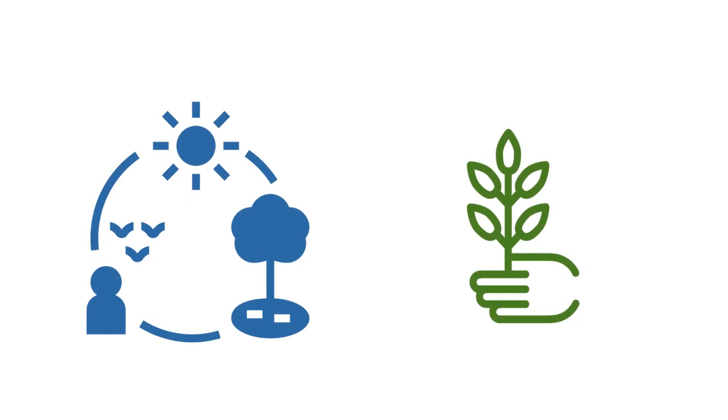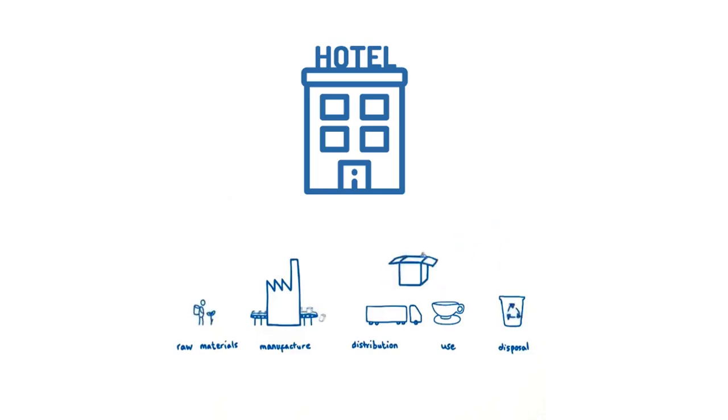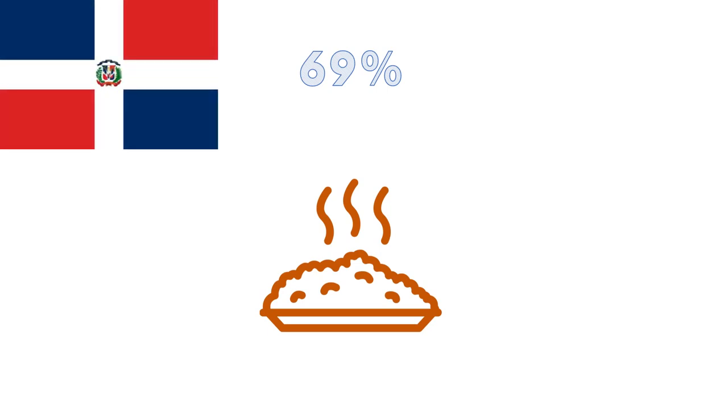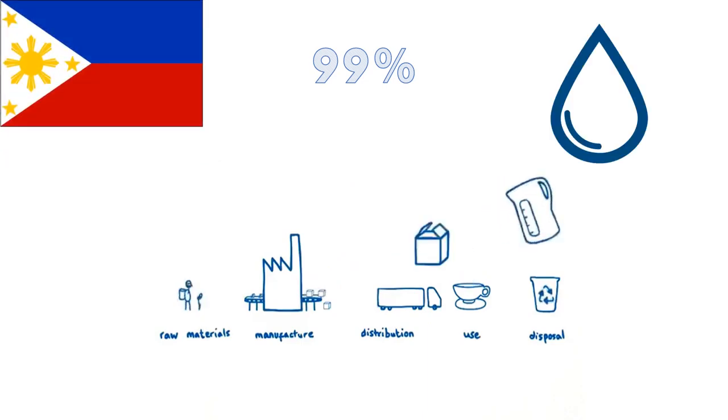Finally, significant impacts occur along the food value chain. In the Dominican Republic alone, food production and imports account for 69% of total greenhouse gas emissions in tourism. The food value chain also represents no less than 99% of the sector's water footprint in the Philippines.